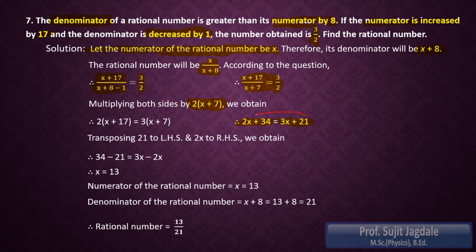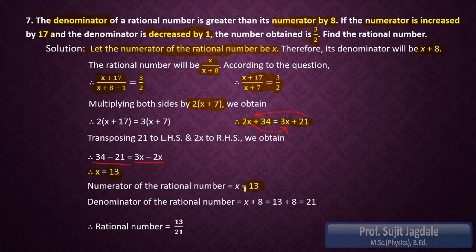Now we transpose the terms: 21 to the LHS and 2x to the RHS. After transposing we get 34 minus 21 equals 3x minus 2x, which gives 13 equals x. Therefore x equals 13, which is the numerator of our rational number. Since the denominator is greater than the numerator by 8, the denominator is 13 plus 8 equals 21. Therefore the rational number is 13 upon 21.